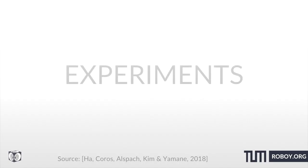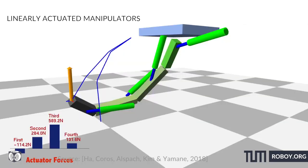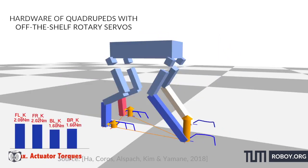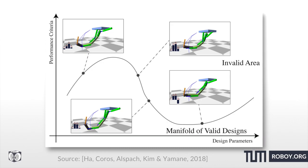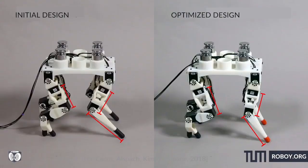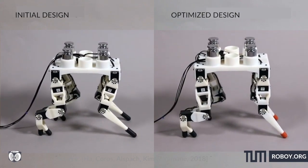They tested three sets of examples: simulation of linearly actuated manipulators, simulation of linearly actuated quadrupeds, and hardware of quadrupeds with off-the-shelf rotary servos. In all three examples, the algorithm first linearizes the local manifold of valid designs implicitly defined by a set of constraints, then changes the design parameters in the direction of the locally defined gradient, showing an improvement in motion through changes in design.